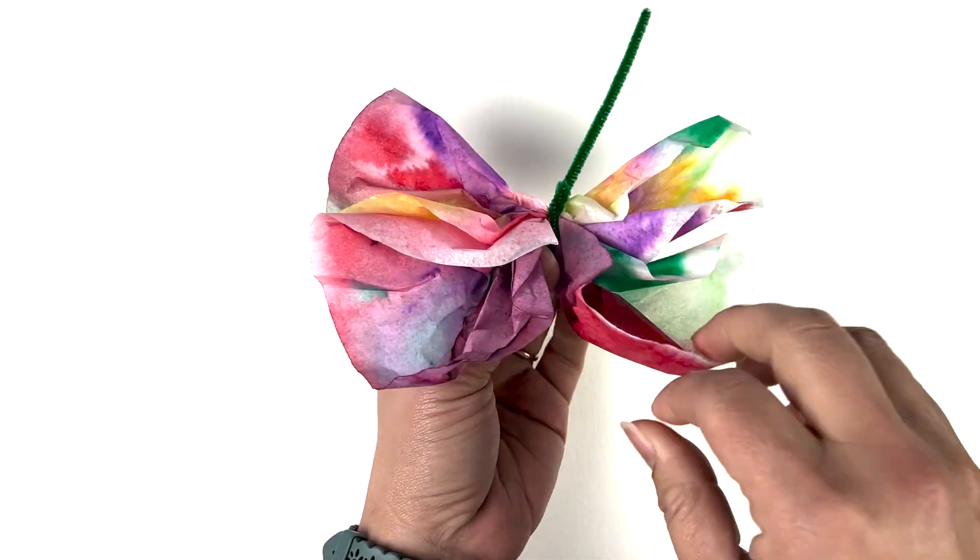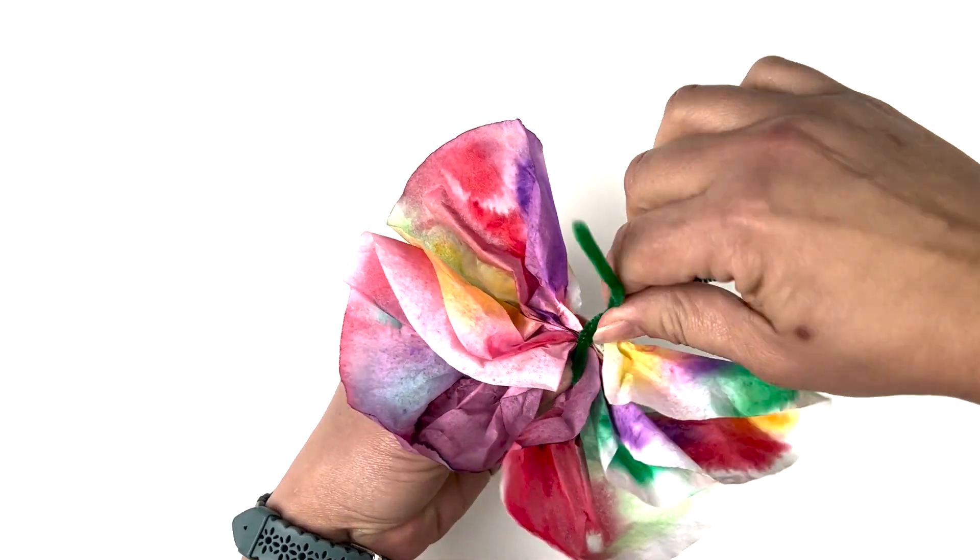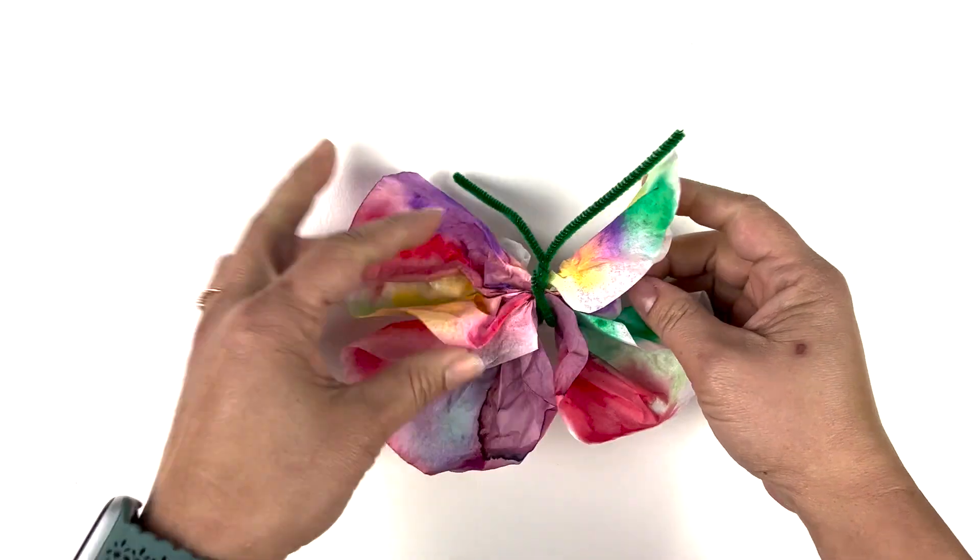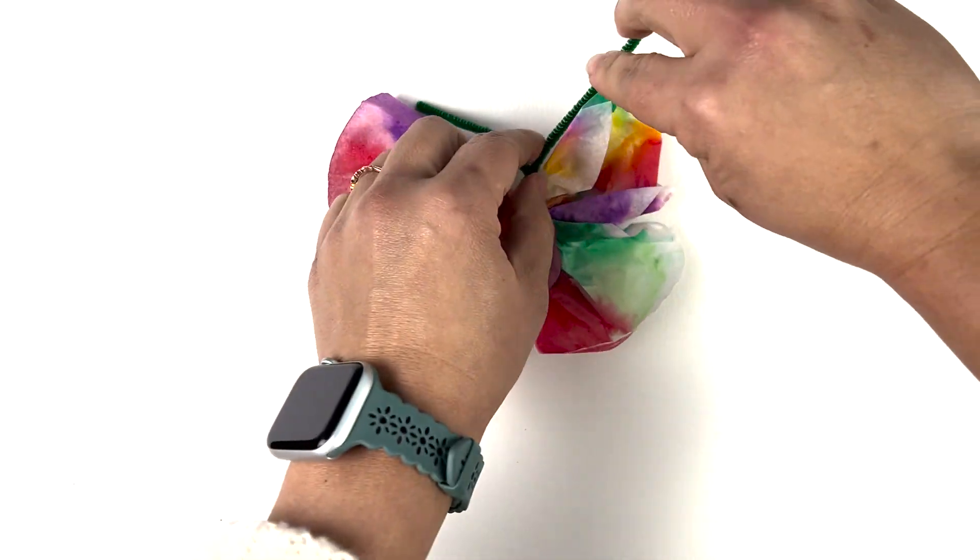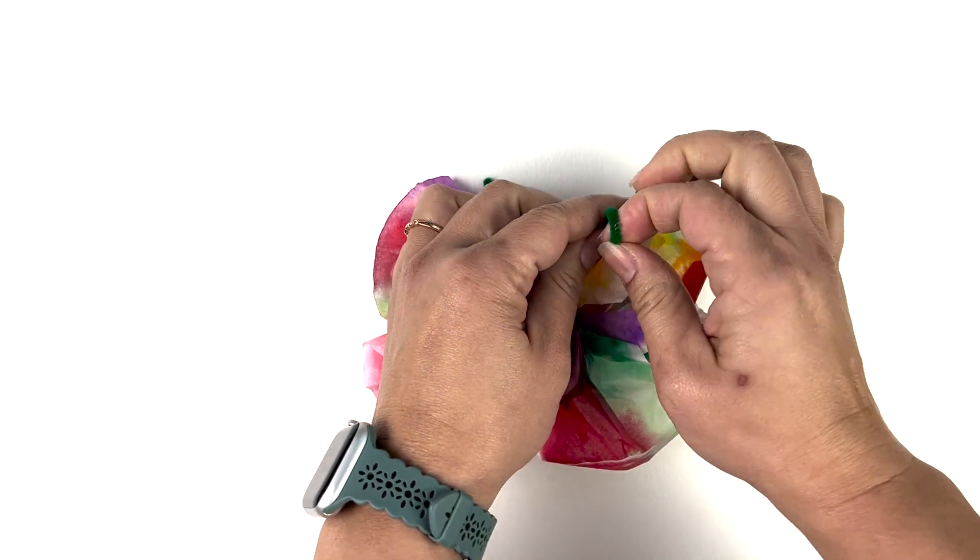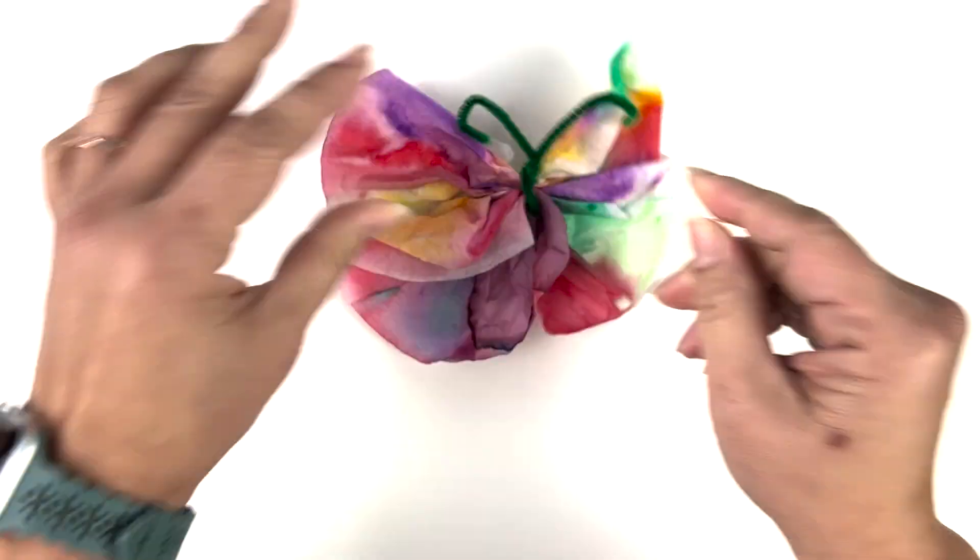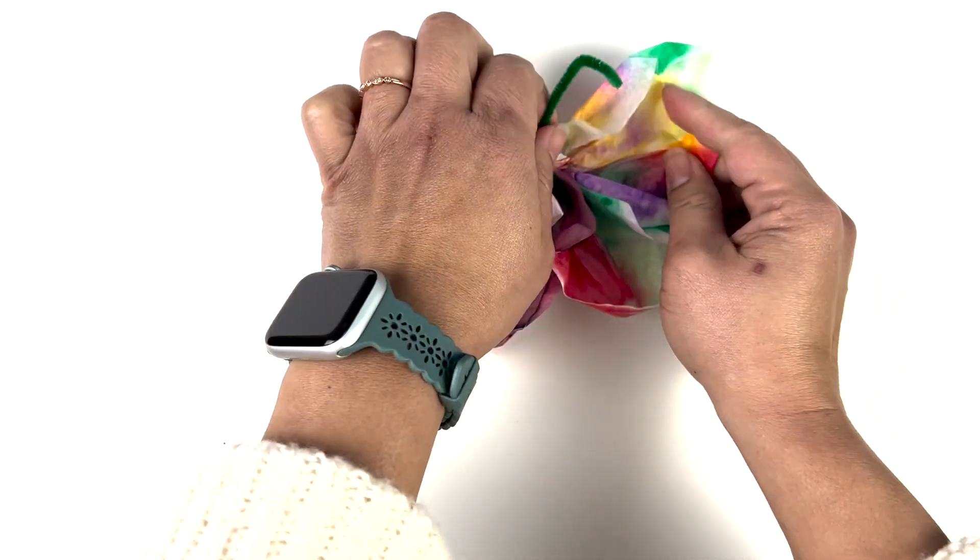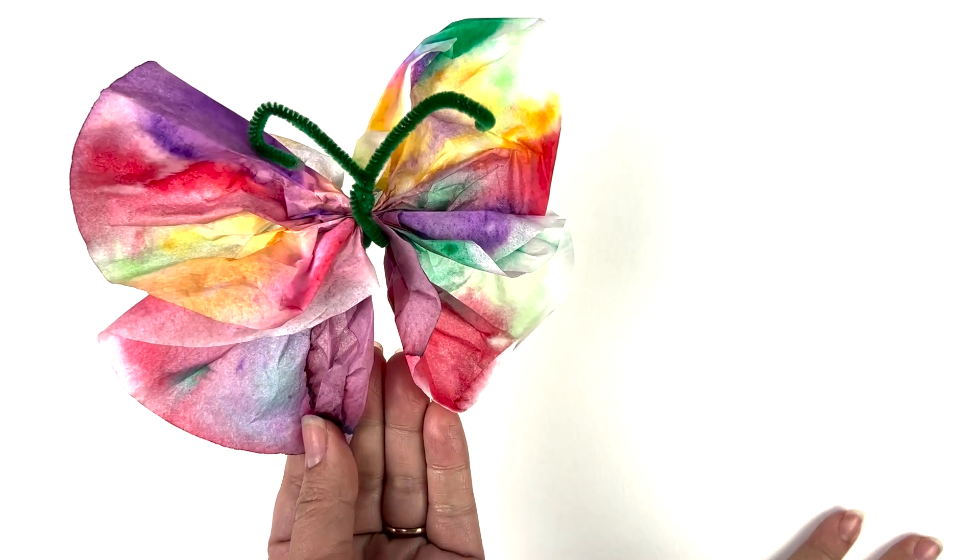This will be the body of your butterfly. You can twist it around a bunch of times. Then you can just spread the wings open. Maybe even curl. Make it even. And now here's your butterfly. Bye.